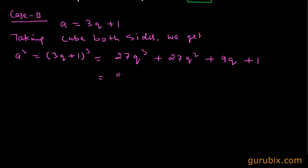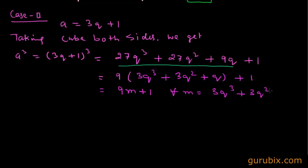Taking 9 common from these three terms, we get 9 times 3q cube plus 3q square plus q and taking 1 outside of this bracket. So we get 9m plus 1 for all m equals 3q cube plus 3q square plus q, and this is what we find out.